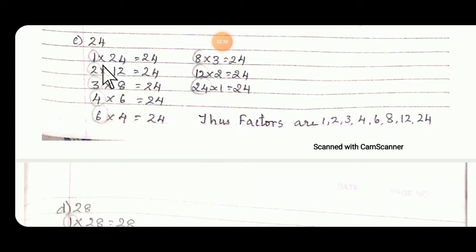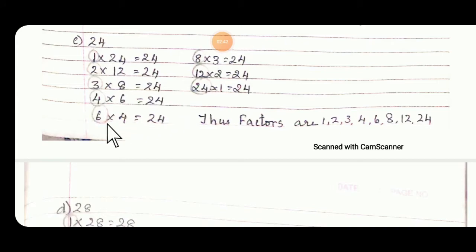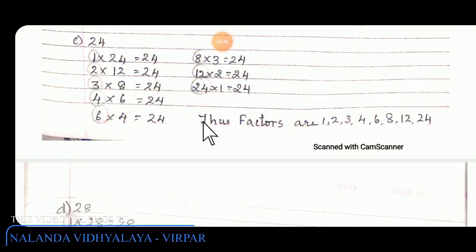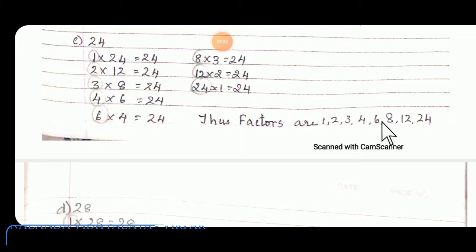Then 24. 1 into 24 equals 24, 2 into 12 equals 24, 3 into 8 equals 24, 4 6s are 24, 6 4s are 24, 8 3s are 24, 12 2s are 24, 24 1s are 24. Those factors are 1, 2, 4, 5, and 20.